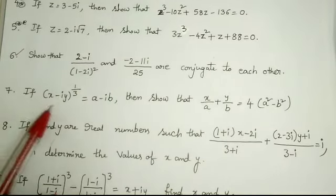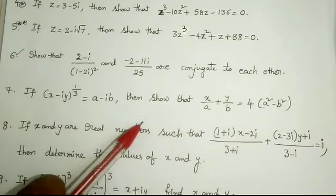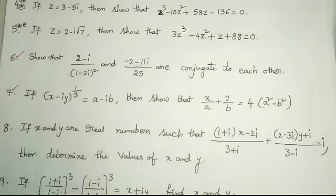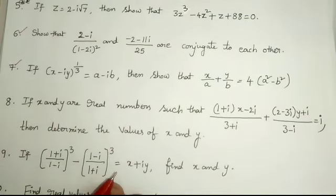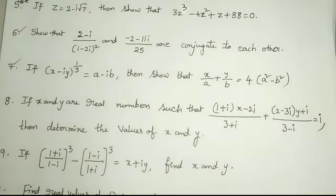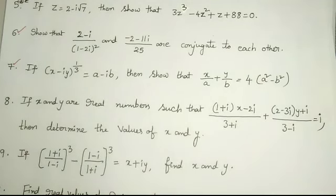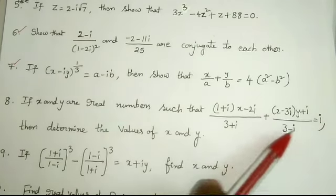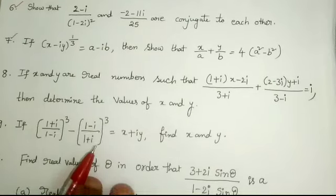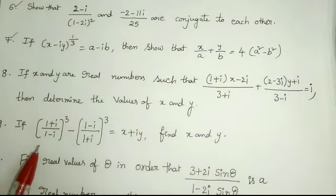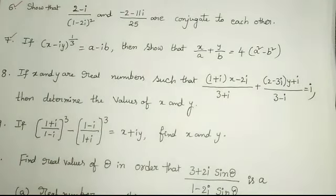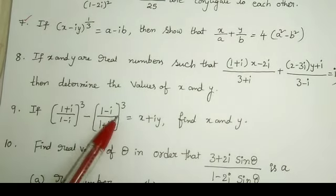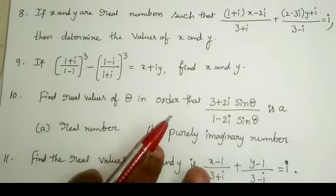Next one: if x minus iy to the power 1 by 3 is equal to a minus ib, then show that x by a plus y by b is equal to 4 times a squared minus b squared. This is also an important question. Next one: if x and y are real numbers such that 1 plus i times x minus 2i by 3 plus i plus 2 minus 3i times y plus i by 3 minus i is equal to i, then determine the values of x and y. Next one: if 1 plus i by 1 minus i whole cube minus 1 minus i by 1 plus i whole cube is equal to x plus iy, then find x and y.